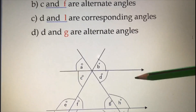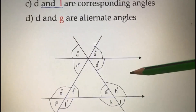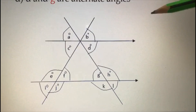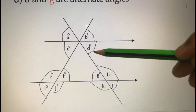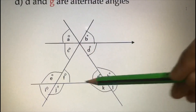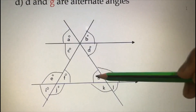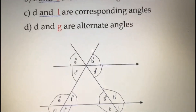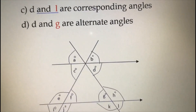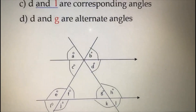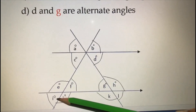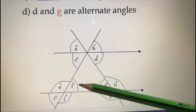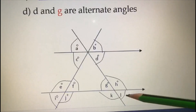And D alternate — think about the letter Z. Start from D, draw Z — inside the Z, G is coming. So D and G are alternate angles. The answers for this question are: C and I corresponding, C and F alternate, D and L corresponding, and D and G alternate.